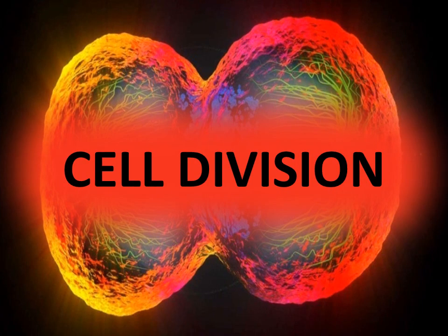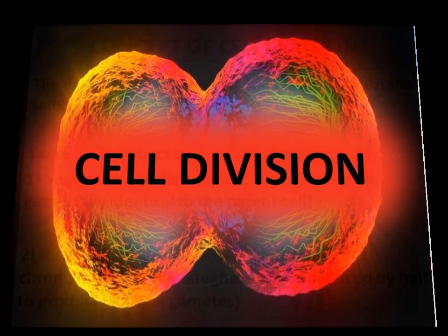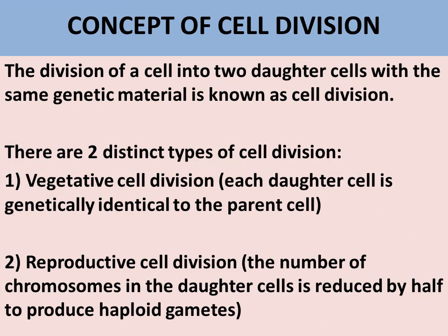What is cell division? The division of a cell into two daughter cells with the same genetic material is known as cell division. There are two distinct types of cell division.